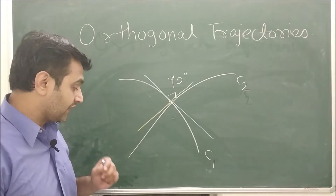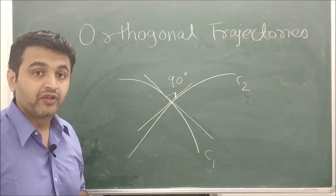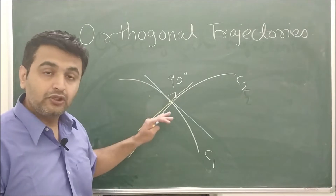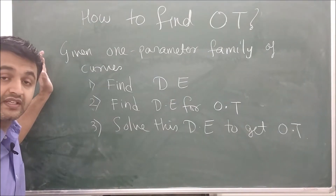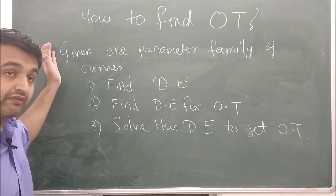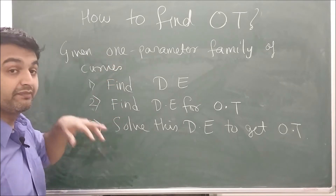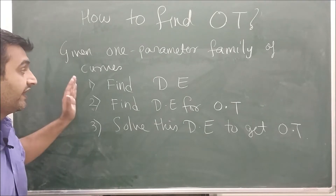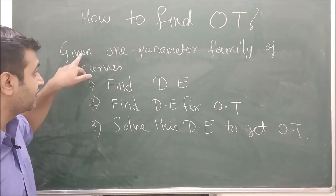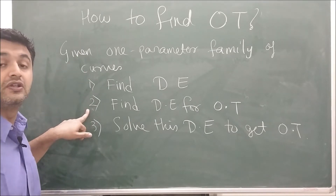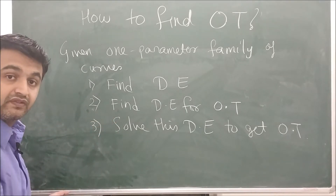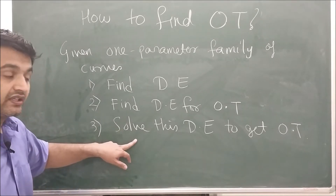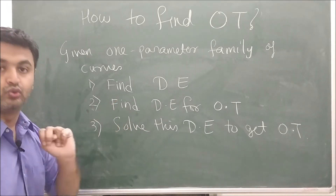That was about the orthogonality of curves. Now, given a family of curves, how do you find its orthogonal trajectories? Here is the method. You are given a one-parameter family of curves — one parameter because you will get only a first order differential equation. Step one: find its corresponding differential equation. Step two: find the differential equation for the orthogonal trajectories. Step three: apply one of the six methods for first order linear differential equations to solve it.